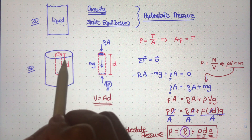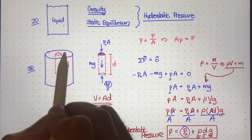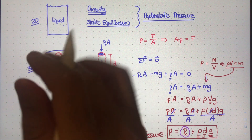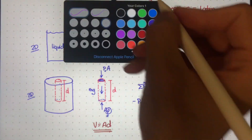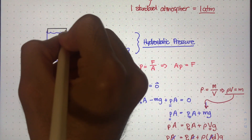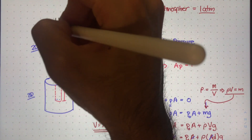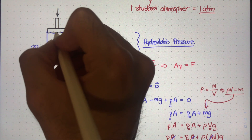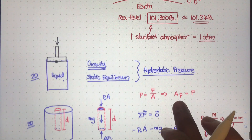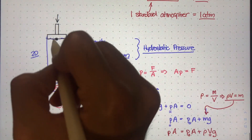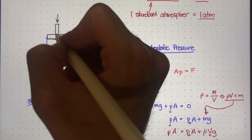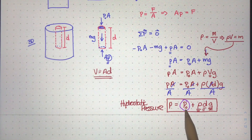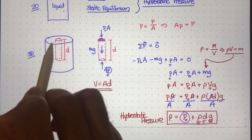But if this container was closed — let's say there was a piston or some kind of surface pushing down on this liquid from the very top — then P0 is no longer just atmospheric pressure. It actually becomes the pressure that whatever force is creating right on the top of this liquid. So remember, P0 is just the pressure being applied at the top surface of this liquid.